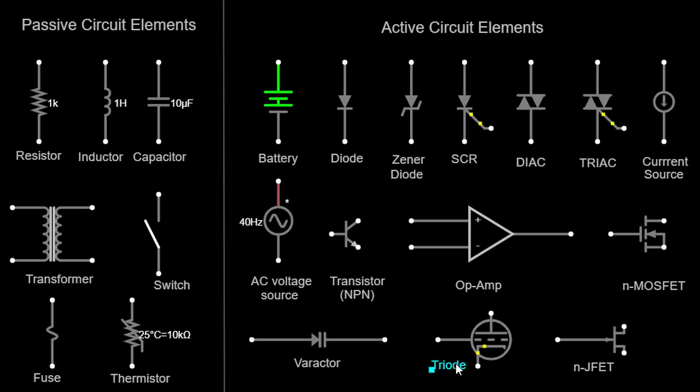Triode. A triode is an electronic vacuum tube or valve with three electrodes, a cathode, a control grid, and an anode. It can be used as an amplifier or an electronic switch. Triodes are represented by three lines connected to the cathode, control grid, and anode.